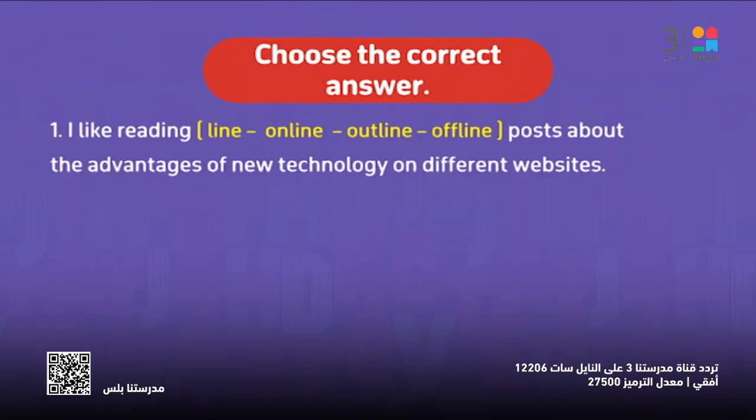Here it says choose the correct answer, again related to vocabulary that we've just covered. 'I like reading ___ posts about the advantages of new technology on different websites.' The options are: line, online, outline, or offline. I want to read about the advantages of technology, so of course it has to be online.